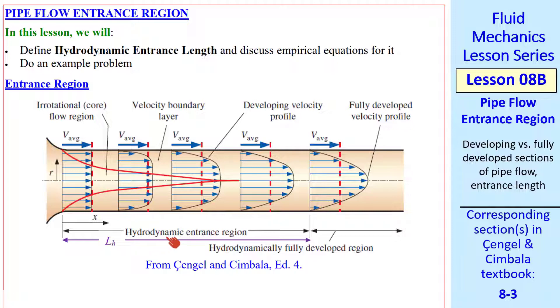We use the adjective hydrodynamic because you can have other kinds of entrance regions such as a thermal entrance region which may be longer or shorter than the hydrodynamic entrance region. That would be the location where the temperature distribution becomes fully developed, which is not shown here. After the entrance region we call this the hydrodynamically fully developed region. We will talk about that in the next lesson.